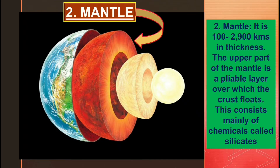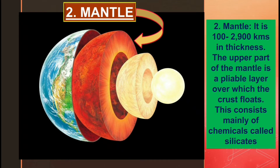The second layer is the mantle. It is 100 to 2900 kilometers in thickness. The upper part of the mantle is a pliable layer over which the crust floats. It consists mainly of chemicals called silicates.